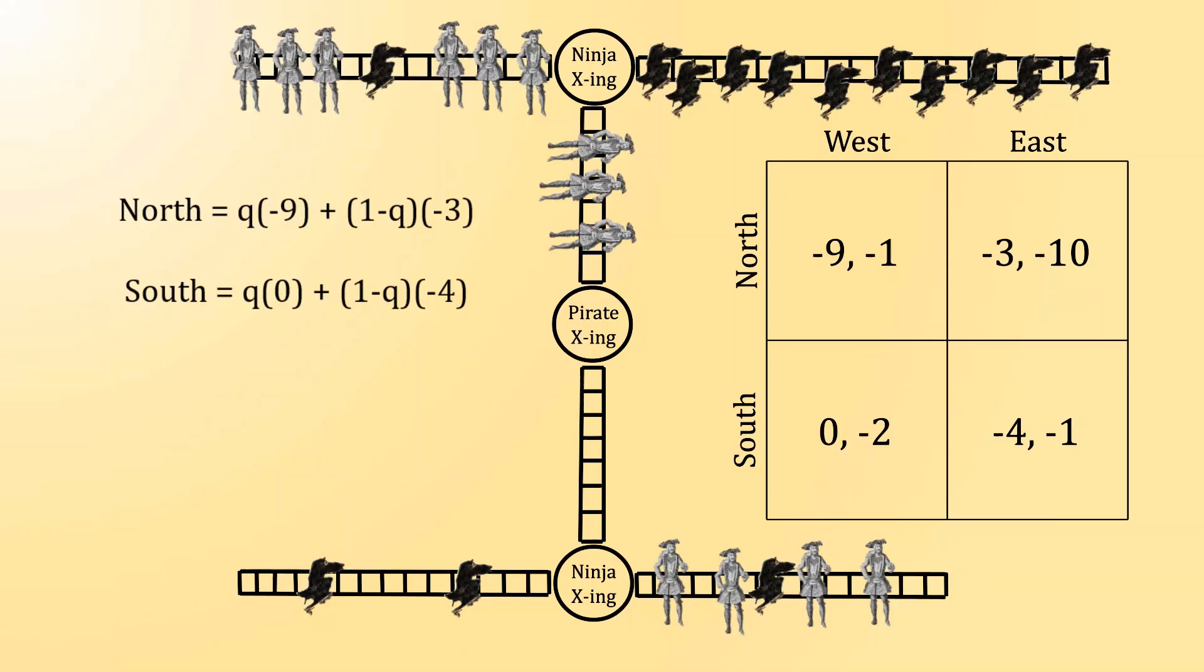Because the ninja's goal is to achieve indifference from the pirate, that means setting the payoff for north equal to the payoff for south. If we then make line 1 equal to line 2, we have one equation with one unknown variable q, which we can then solve for. And if we do that, we also get 1 tenth.